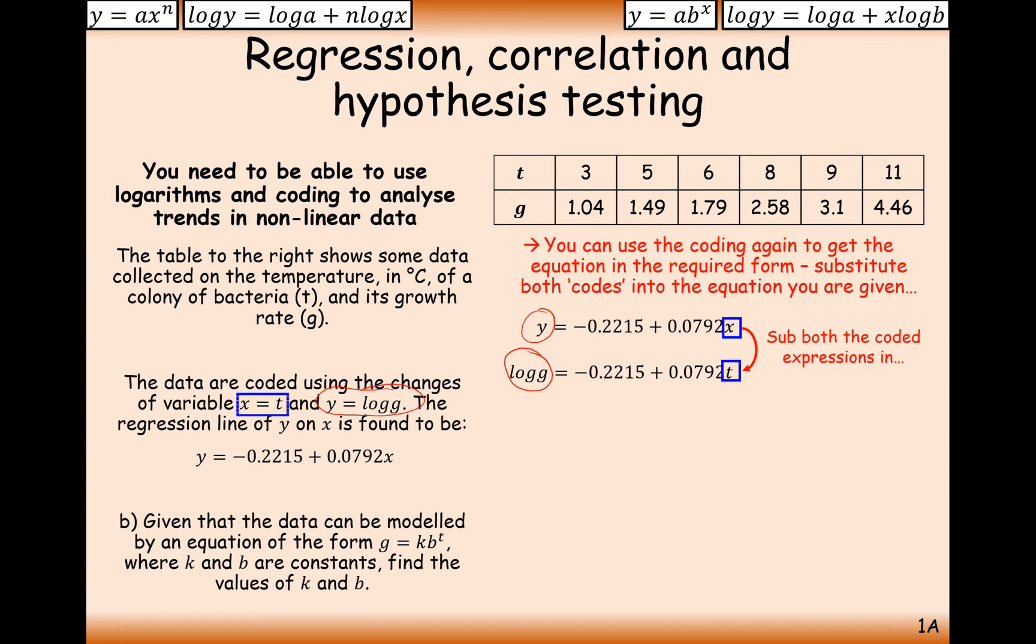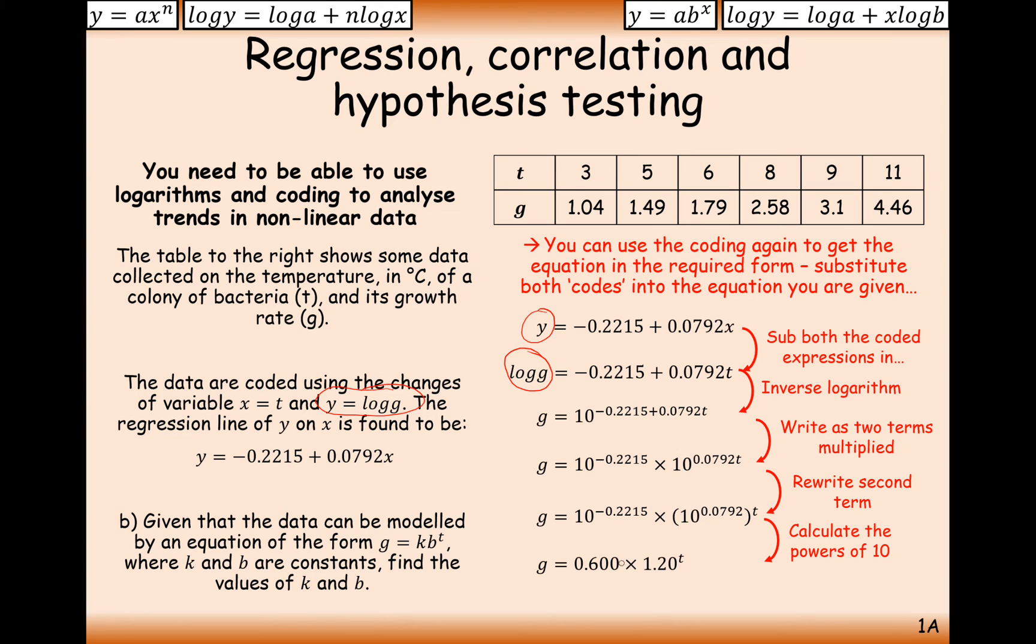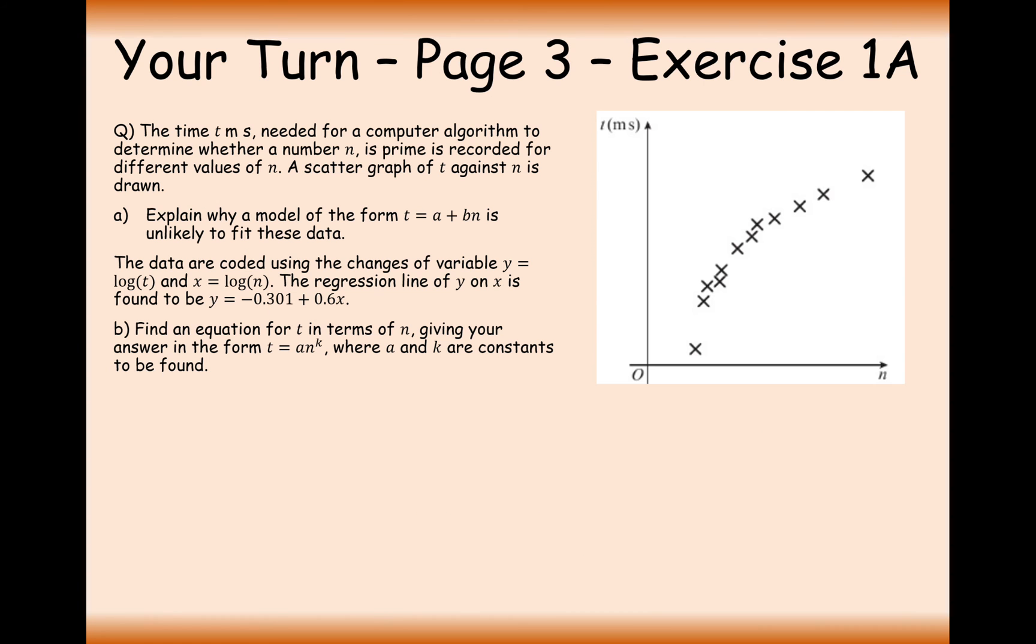Then we can rearrange this equation back into g equals k times b to the power of t. We're going to get rid of the log, and the way we undo a log base 10 is do 10 to the power of the other side. Split up the indices, it's an addition of two indices, so we multiply them with the same base number. Then we simplify 10 to the power of minus 0.2215, which we've already seen is 0.600. And 10 to the power of 0.0792, leave the t to one side for now, is 1.20. So therefore, k, the initial starting growth rate, is 0.6 grams. And b, which is the rate at which the growth is increasing by, is 1.20, which is the decimal multiplier for the rate of growth.